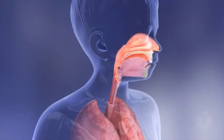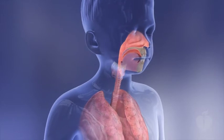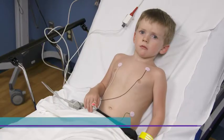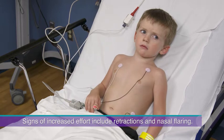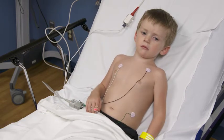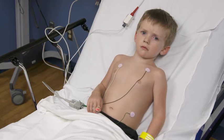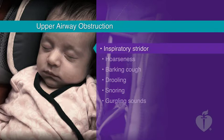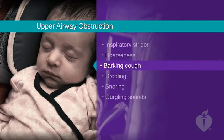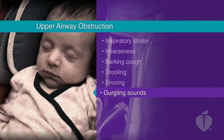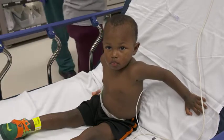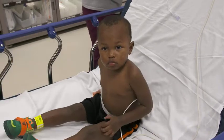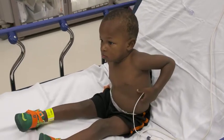The child with upper airway obstruction, such as croup, typically has increased respiratory rate and effort. Signs of increased effort include retractions and nasal flaring. Retractions occur in children because of their increased chest wall compliance and the negative intrathoracic pressure. The child with upper airway obstruction often has inspiratory stridor, a high-pitched inspiratory sound, hoarseness, and a barking cough. Other signs may include drooling, snoring, or gurgling sounds. Responsive older children with upper airway obstruction often position themselves in a way that makes their breathing easier and should be allowed to remain in a position of comfort.